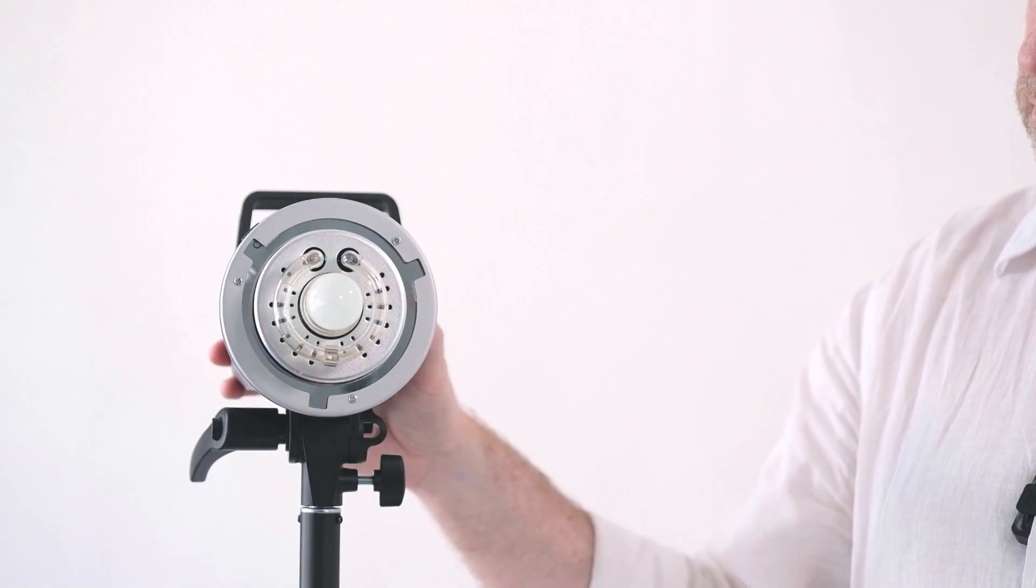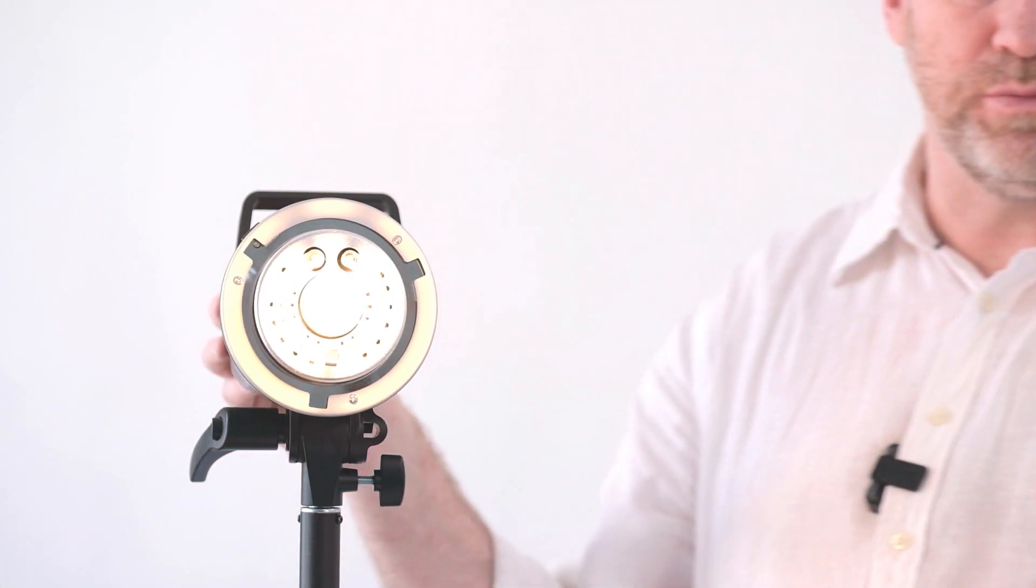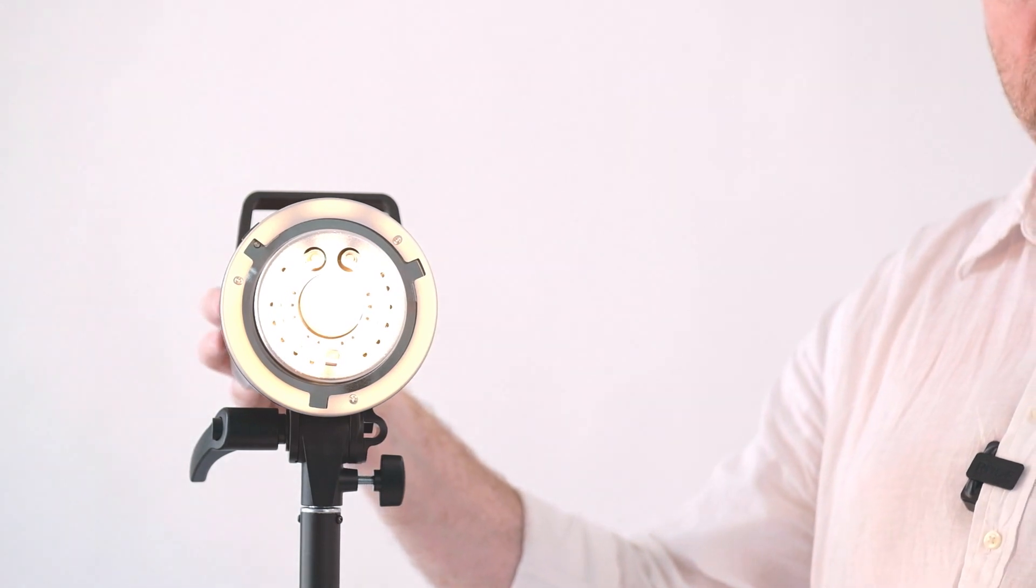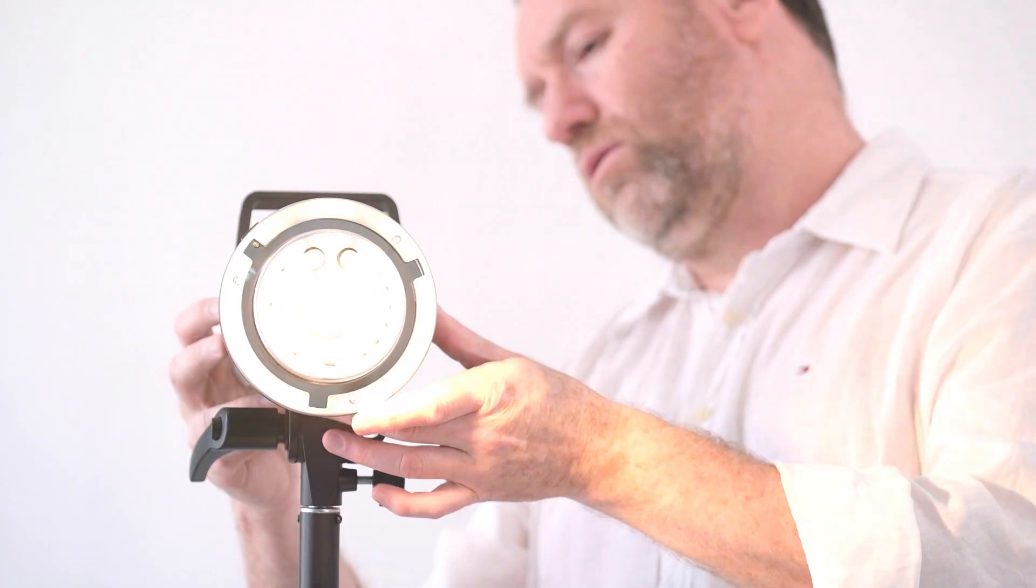Before we start firing the flash, we can actually turn on the modeling light. It's on what's known as a proportional setting—that means depending on the power of the flash, it will brighten or darken. If I hit another button, it's currently at a hundred percent, so that's as bright as the modeling light will go. And of course you can have the modeling light turned off.